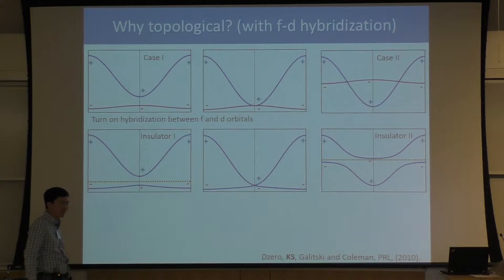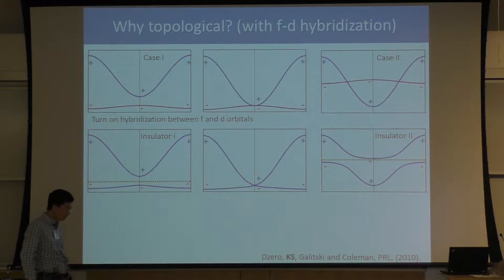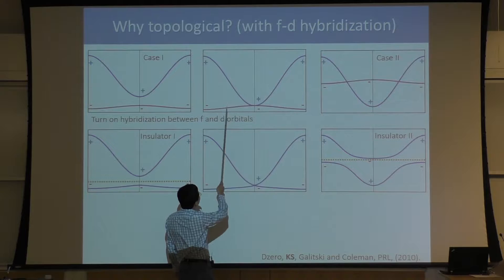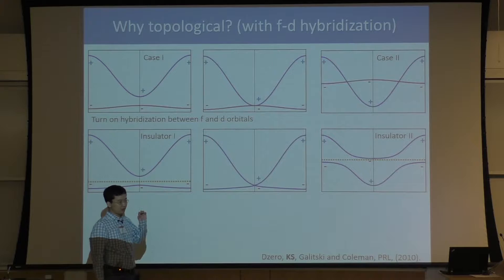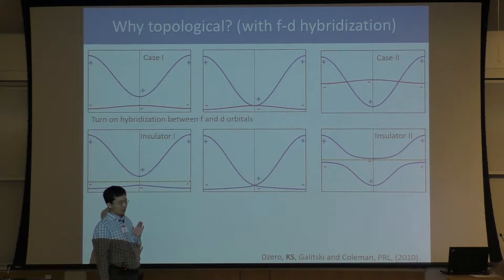Because of atomic orbitals, d and f have different parities. In a lattice, at any finite k, parity is not a good quantum number — when you do the parity operation r to minus r, k goes to minus k. But when k is zero or pi, parity becomes a good quantum number. Momentum zero after parity gives zero; momentum pi, minus pi is the same as pi due to periodicity. So the parity symmetry only matters at momentum zero and pi.